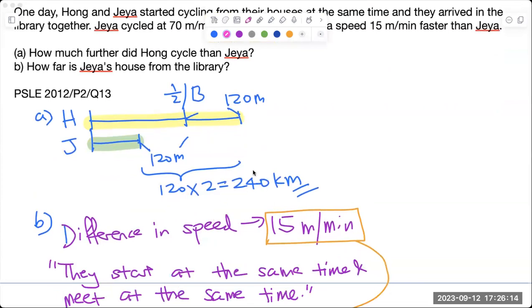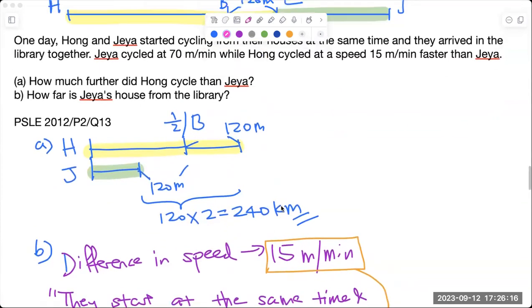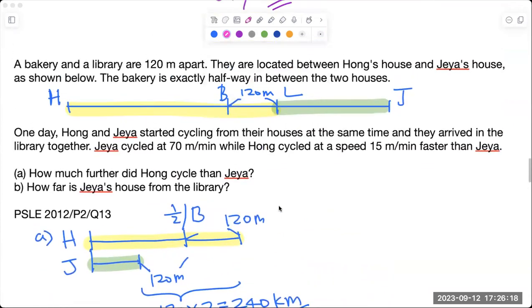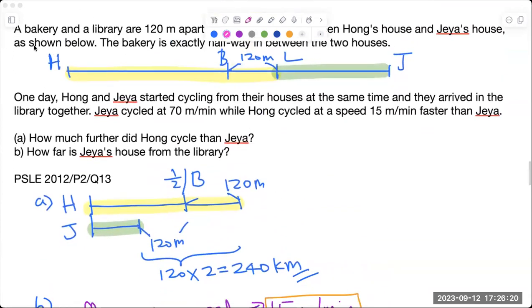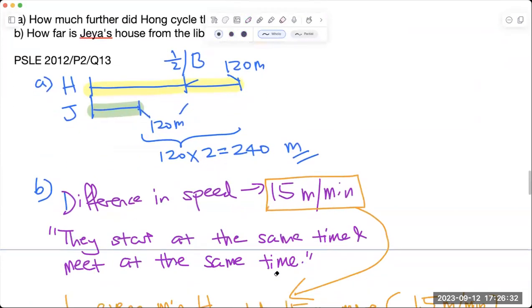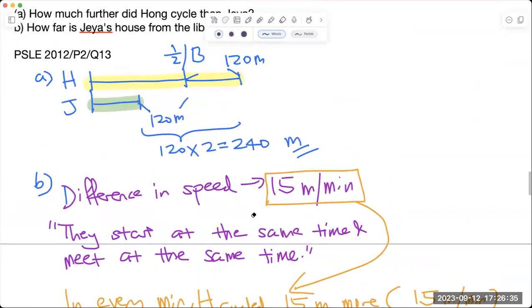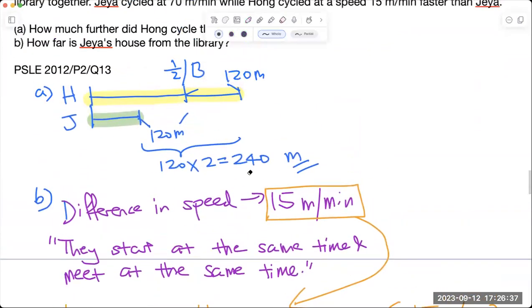For the fact that Hong is traveling at 50 meters per minute and Hong has to cover 240 kilometers... give me a minute, is it kilometers? Sorry, my apologies, it's not kilometers. It's actually meters. Let me just erase the K.